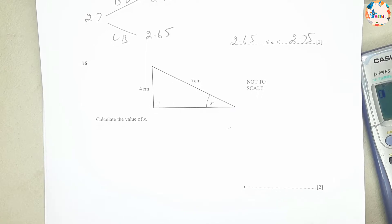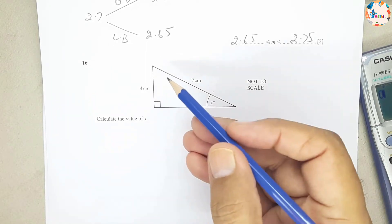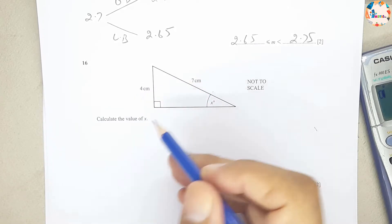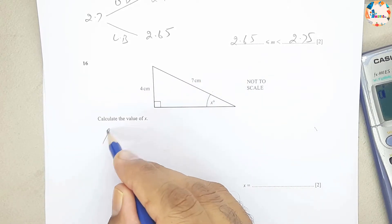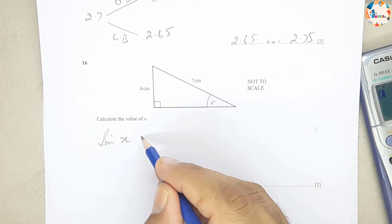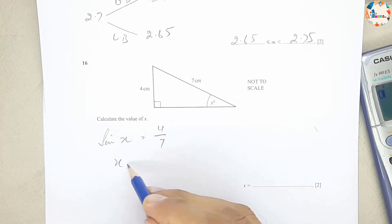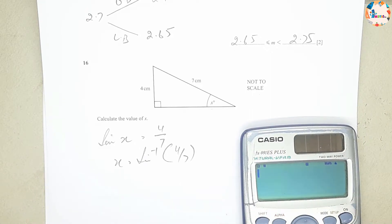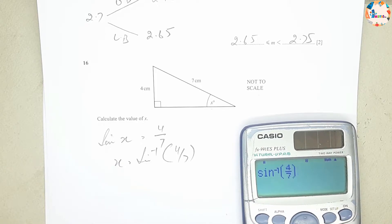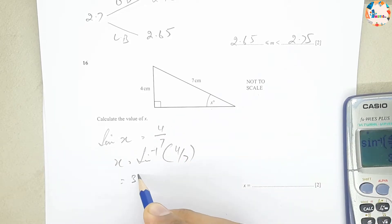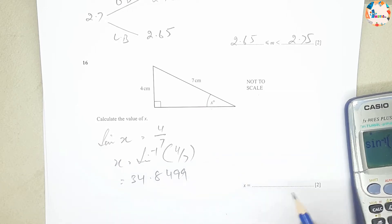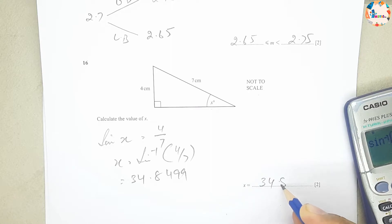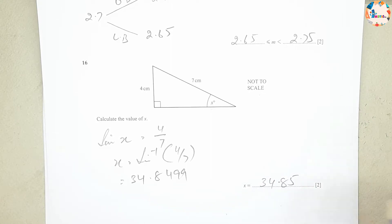Question number 16: calculate the value of x using trigonometry. The opposite side is 4 and the hypotenuse is 7. Since sin(x) = opposite/hypotenuse = 4/7, x = sin⁻¹(4/7) = 34.85 degrees.